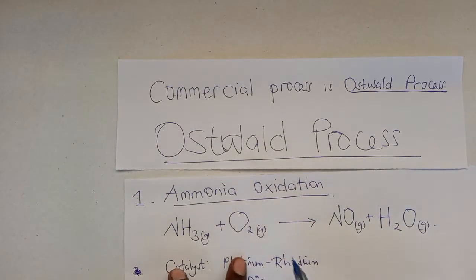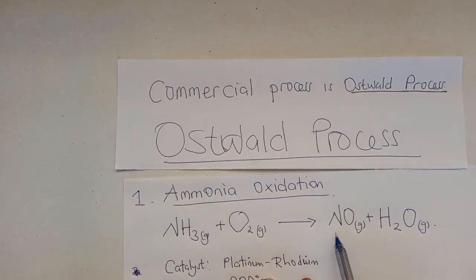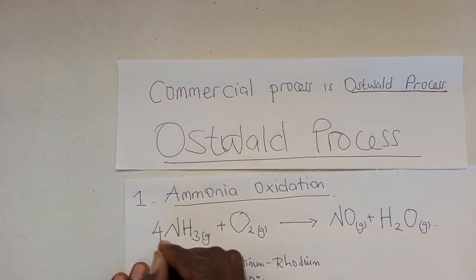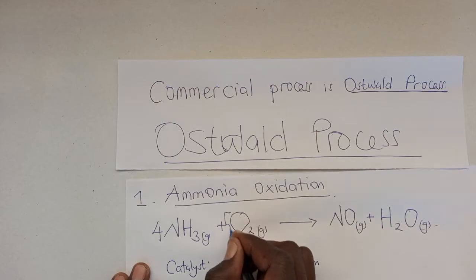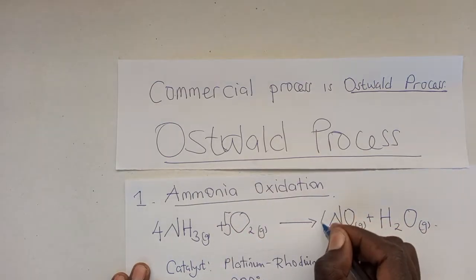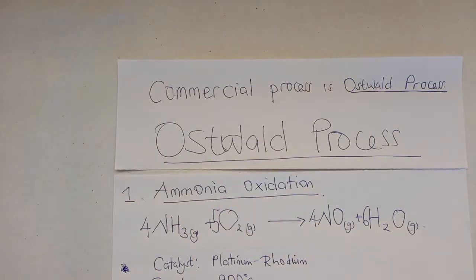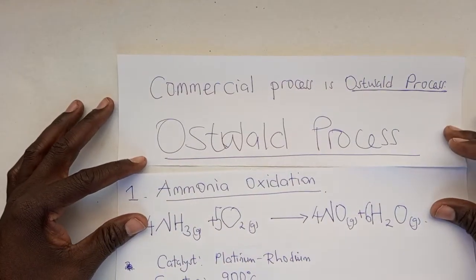In this process, you have the ammonia gas being reacted with excess air to produce nitrogen monoxide and hydrogen gas. The equation is: NH3(g) + O2(g) → NO(g) + H2O(g). If you look at this equation, it's not balanced. For us to balance it, we'll have a 4 here, a 5 here, a 4 here, and a 6 here.